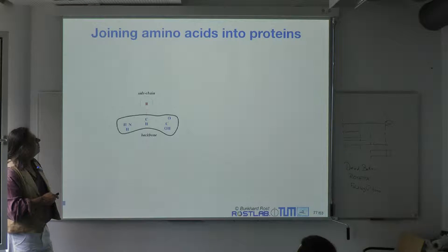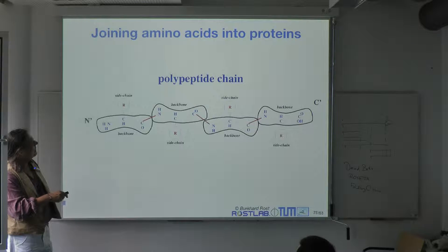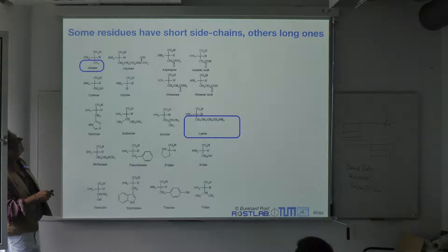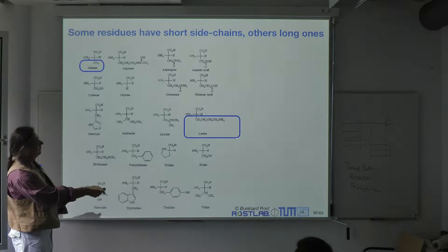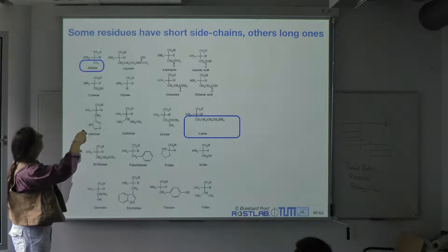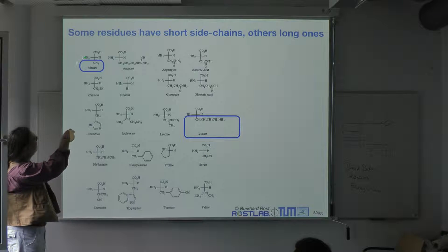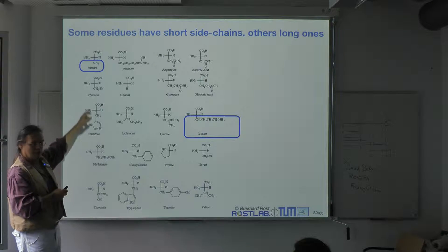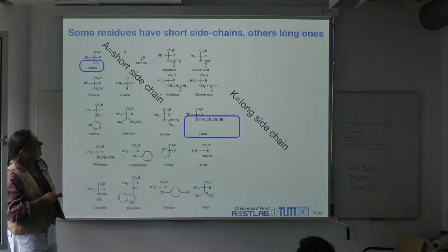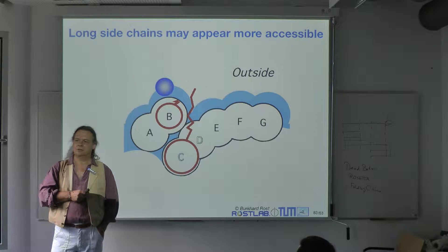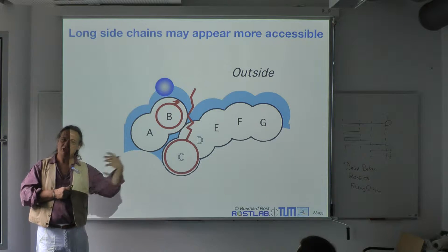The way you join amino acids is over the backbone. These are the side chains. This builds up the polypeptide chain, shown here. Some side chains along the lysine — this part here is the backbone, it's always the same. Side chains like alanine or glycine are short, which explains why they are so flexible.